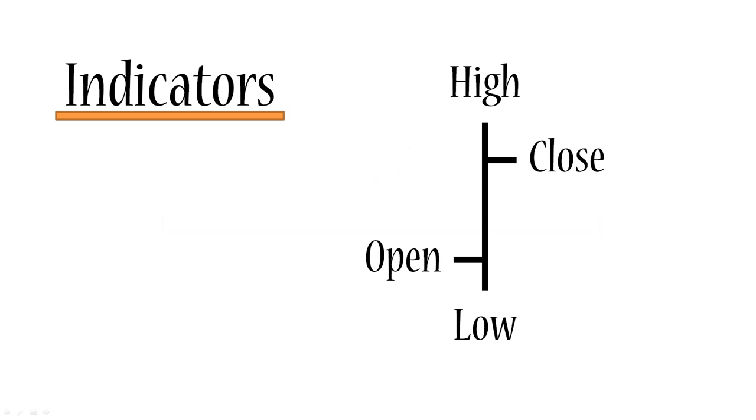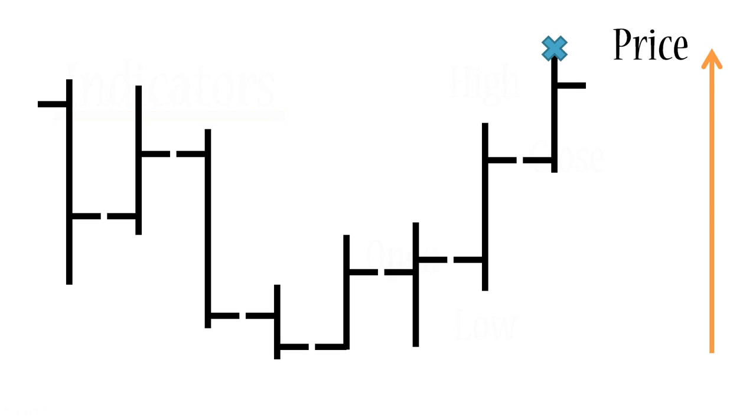As you can remember, we talked about that the price has four main elements: the high, the low, the open, and the close. So indicators are basically aggregators of these values. You have a stream of values of high, open, low, close coming into your terminal all the time, and what indicators do is they process these values to give you a different perspective on the market.